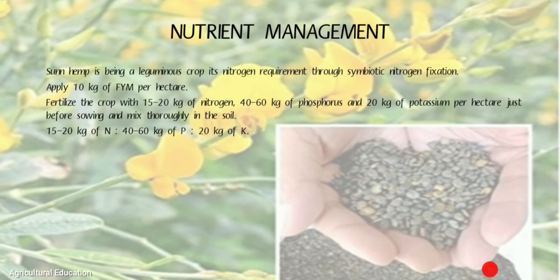Nutrient Management: Sunhemp being a leguminous crop meets its nitrogen requirement through symbiotic nitrogen fixation. Apply 10 kg of farmyard manure per hectare. Fertilize the crop with 15–20 kg of nitrogen, 40–60 kg of phosphorus, and 20 kg of potassium in the form of K₂O.